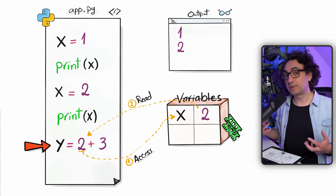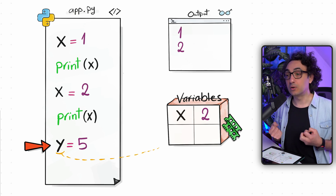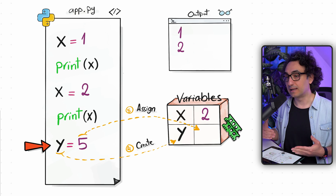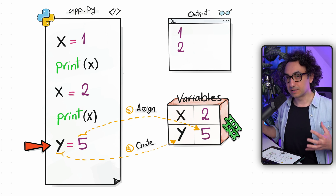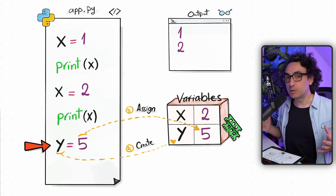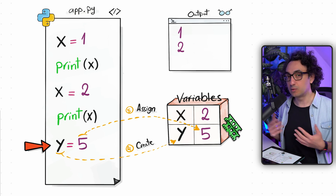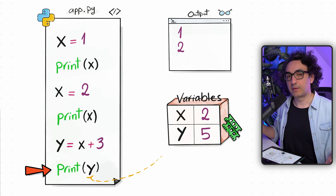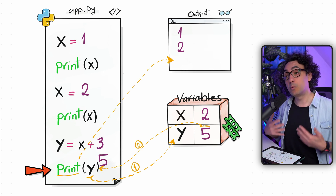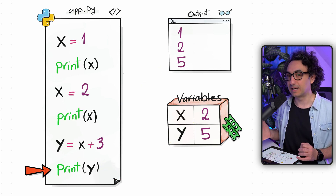Now Python can do the calculation: two plus three equals five. It creates a new variable called y and assigns it the value five. In our memory we now have two variables, each holding a value, and you can use them anytime in your program for calculations, comparisons, displaying them — anything. For example, print y: Python searches for y, returns five, and prints it. This is exactly how Python executes variables behind the scenes.